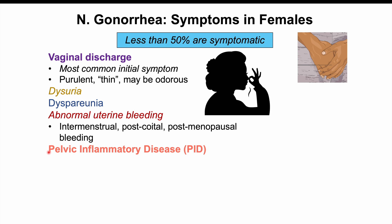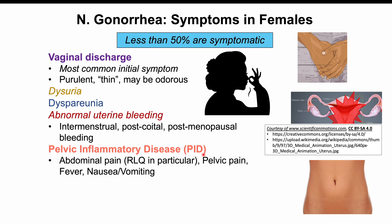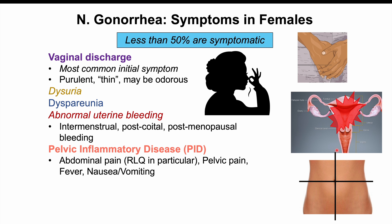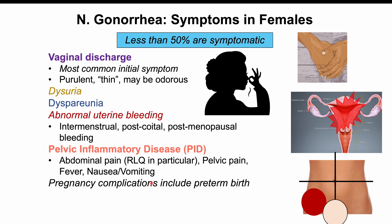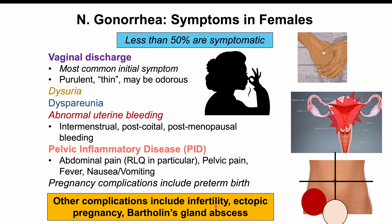Some female patients develop pelvic inflammatory disease (PID), resulting from retrograde spread in approximately 20% of patients. PID presents with right lower quadrant abdominal pain and pelvic pain, as well as fever and nausea or vomiting in less common cases. Pregnancy complications can include preterm birth, and because females may be asymptomatic, untreated gonorrhea can lead to infertility.